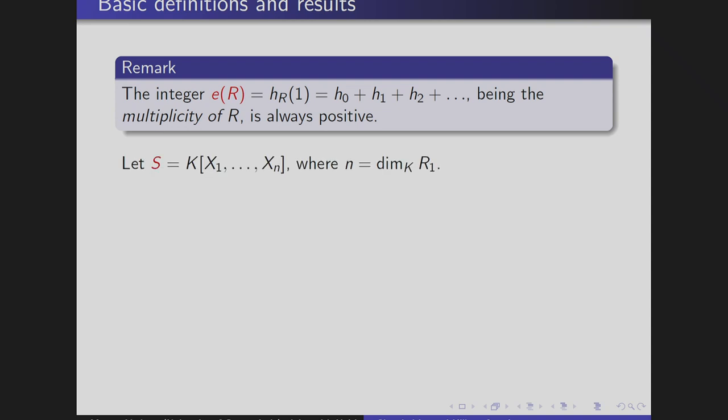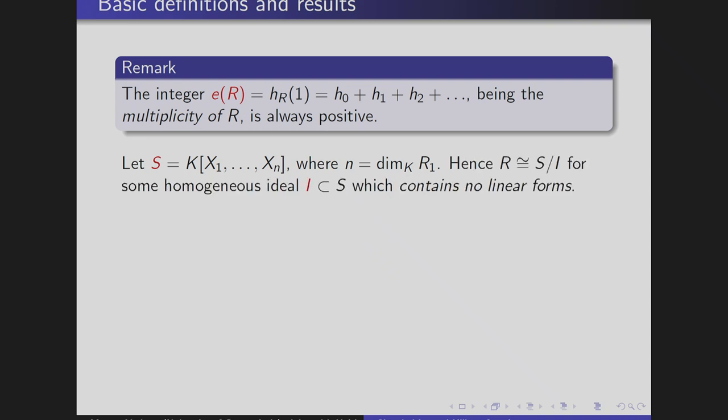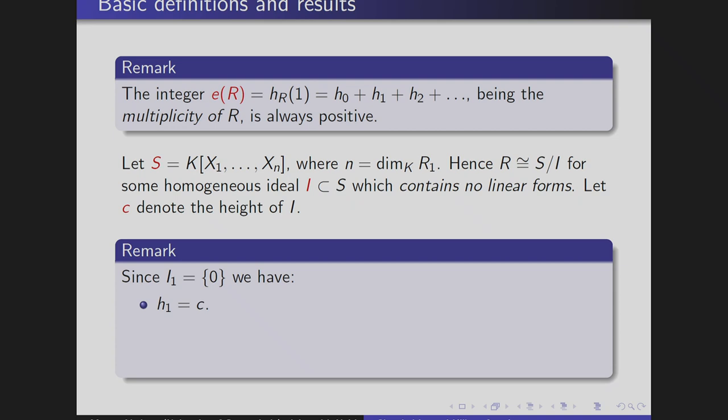Now, if we denote by n the dimension of R_1 as a k-vector space, then R can be seen as a quotient of a polynomial ring in n variables over k modulo a homogeneous ideal I, where I contains no linear forms. If we denote by c the height of I, then H_1 is exactly c, the codimension — the height of I.